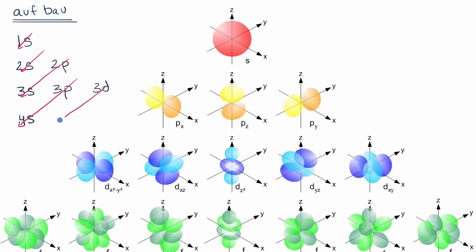And then after 3d, you would go to 4p, and after 4p, you would get to 5s. So let me draw that just like that.